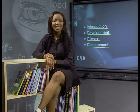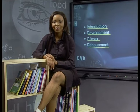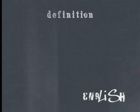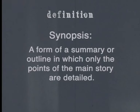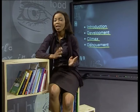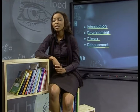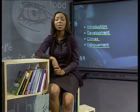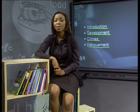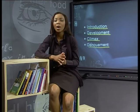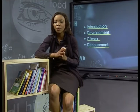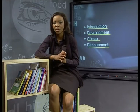First, let's look at the synopsis of the plot. A synopsis is a form of summary or outline in which only the main points of the story are detailed. Even though the synopsis will tell you the main events of the plot, it would be best if you are able to read the full text of the story.